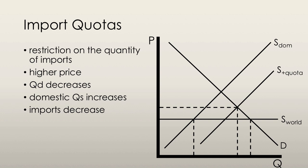The price has clearly risen and this causes a decrease in the quantity demanded. To find the new domestic quantity supplied, we find the point on the old domestic supply curve that corresponds to the new price. This is the new quantity supplied domestically.